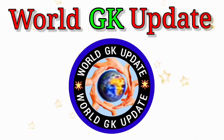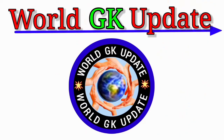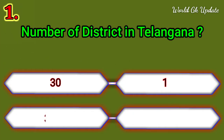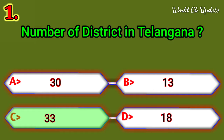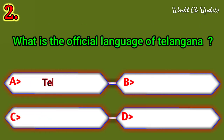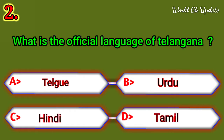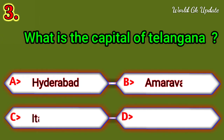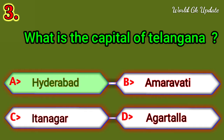Welcome, dear friends, to my channel World GK Update. Let's get started. Question number one: what is the number of districts in Telangana? The right answer is 33. What is the official language of Telangana? The right answer is Telugu. Which is the capital of Telangana? The right answer is Hyderabad.